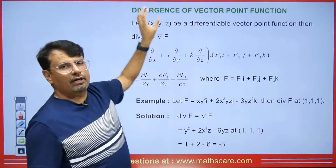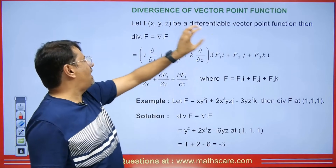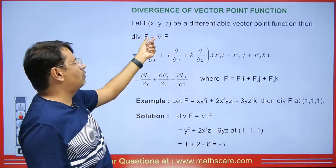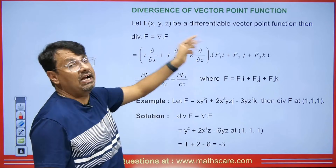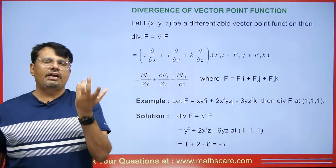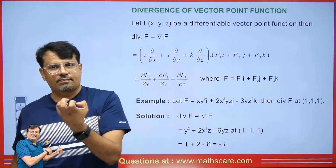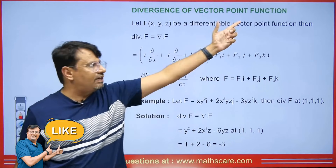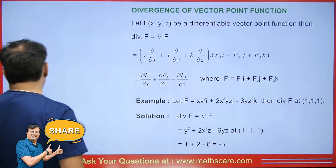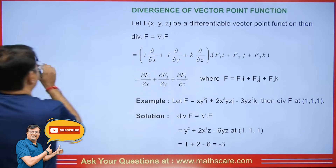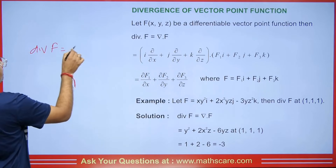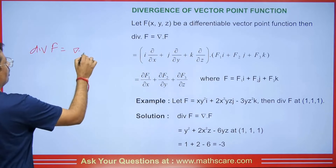Let us say we are given any vector point function and we have to proceed with its differentiation. We are aware that the divergence of f is del·f. In the previous class, I covered gradient calculations and related concepts plus basic vector concepts — check the i-tab if you missed it, the link is given in the description. To find the divergence of a vector point function, it is del·f.